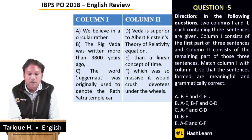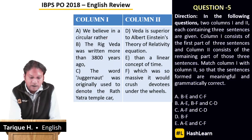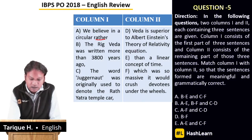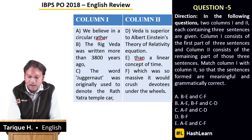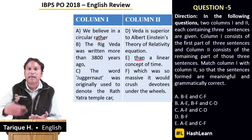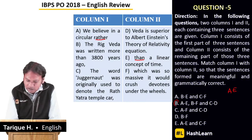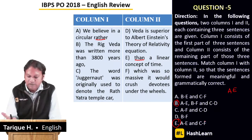Let's look at column one and two. 'We believe in a circular rather' — when we see 'rather,' we look for 'than.' Scanning D, E, F: 'than a linear concept of time' — circular goes with linear, so A and E are a correct pair. This pair appears in answer options B and E, so we narrow down to those.